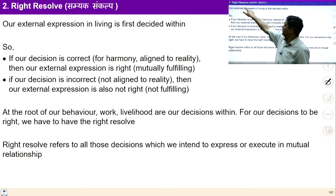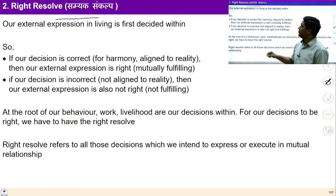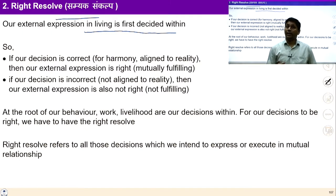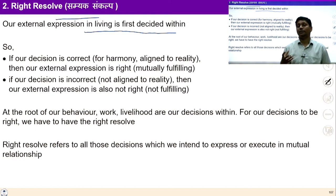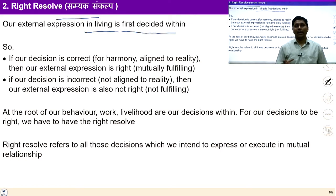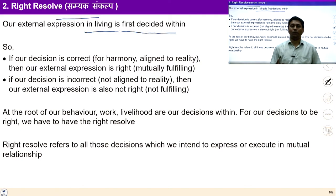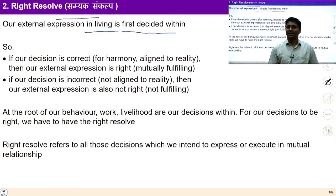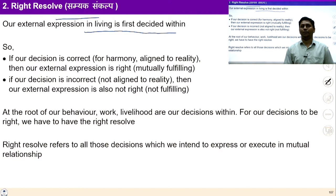The next step is Right Resolve — Samyak Sankalpa. Right resolve means, after correctly identifying our aspirations and the source of real happiness, we need to have the right resolve to take up essential activities with responsibility. Our external expression in living is first decided within. Whatever actions we take are first decided within myself. If we are unable to take up a resolution to pursue our basic aspirations and make wrong decisions, we deviate from the path for a longer period. That is why right resolve is required.